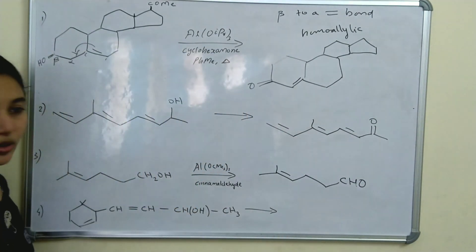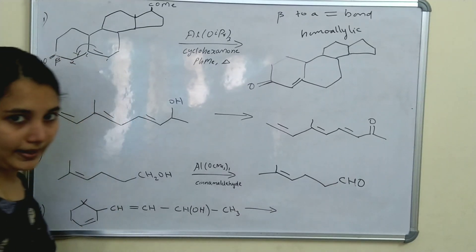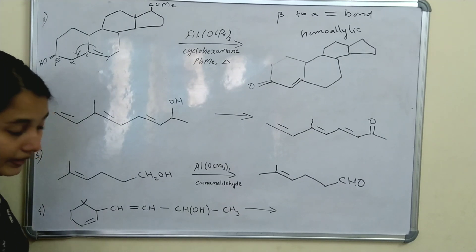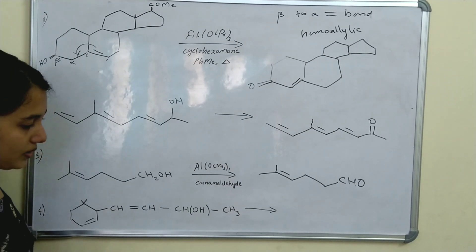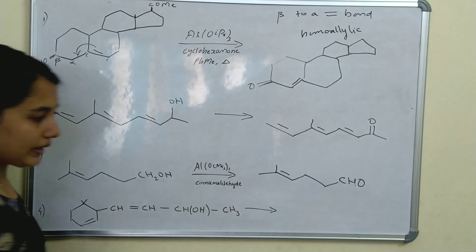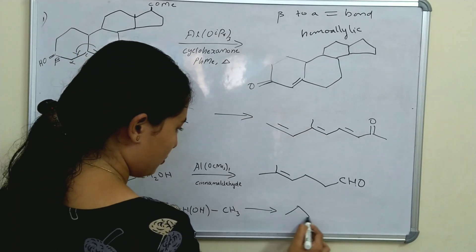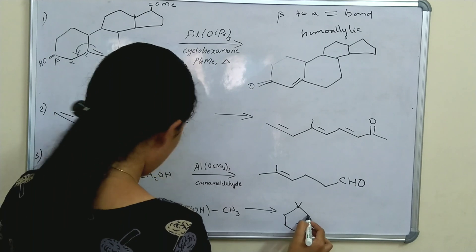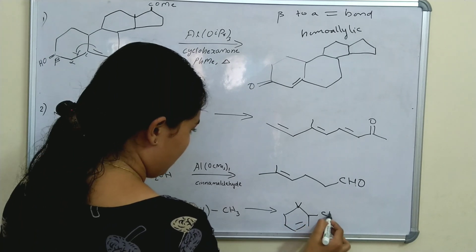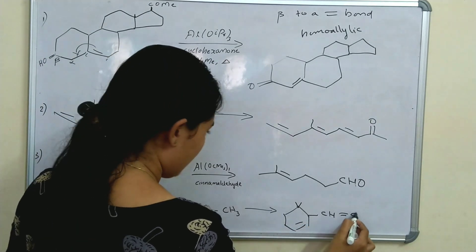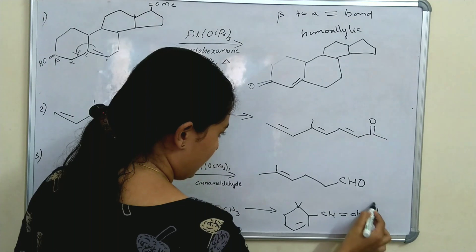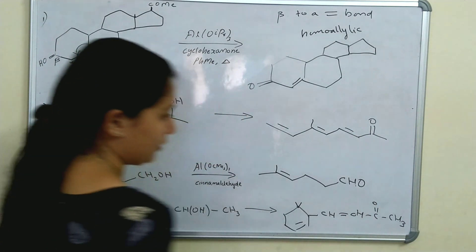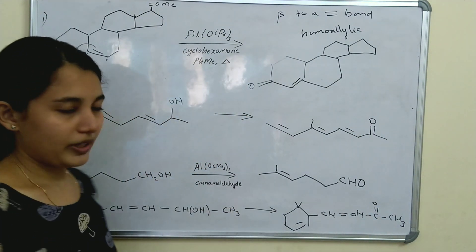In the other examples, primary OH is converted to an aldehyde and secondary OH is converted to a ketone. In the second example, the double bond is not affected because it is not a homoallylic alcohol. So the double bond is not affected, the OH is oxidized to a ketone, and the double bond of CH3 remains unchanged. The rest of the compound is the same.